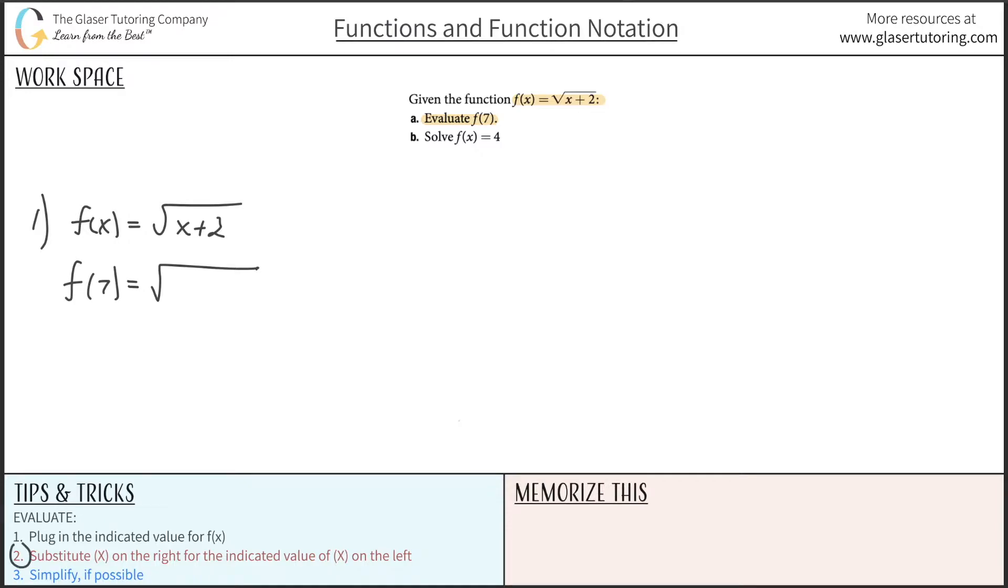The second step now says to substitute x on the right for the indicated value of x on the left. So basically, instead of x now, I substituted the value of 7. So if I substituted the value of 7 on the left-hand side, guess what I have to do on the right-hand side? Anywhere I see an x, I have to substitute 7 for it. So there's going to be 7 plus 2.